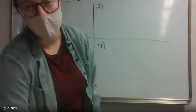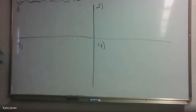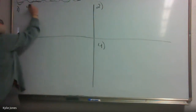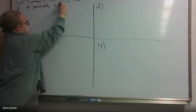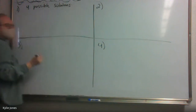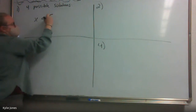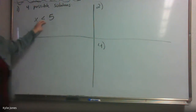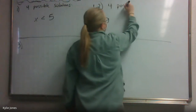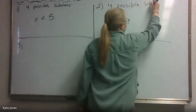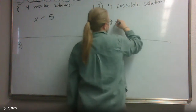We're thinking about inequalities, so we're going to start. I'm going to write a couple on the board. For the first one, I want you to give me four solutions. Four possible solutions to x is less than five. For number two, four possible solutions for x is greater than or equal to ten.